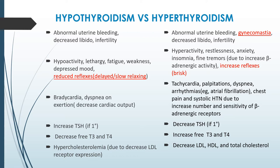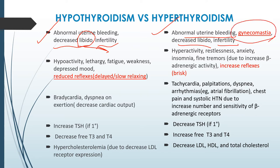In reproductive findings, hypothyroidism shows abnormal uterine bleeding, decreased libido, and infertility. In hyperthyroidism, similarly there is abnormal uterine bleeding, decreased libido, and infertility. One additional point is that gynecomastia — increased breast tissue — is seen in males with hyperthyroidism.